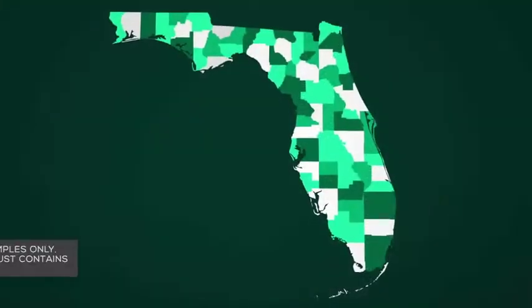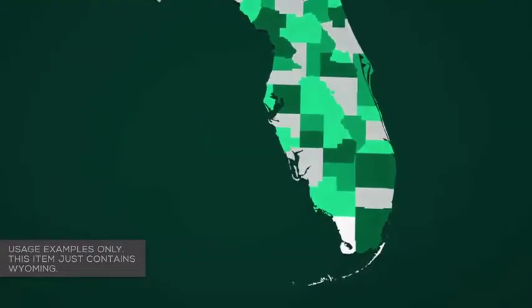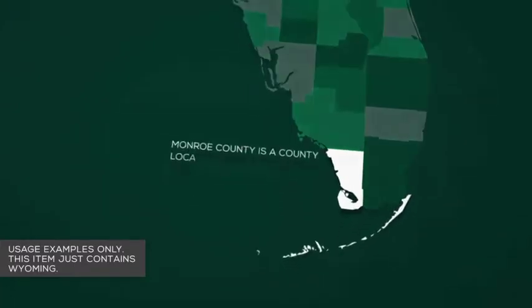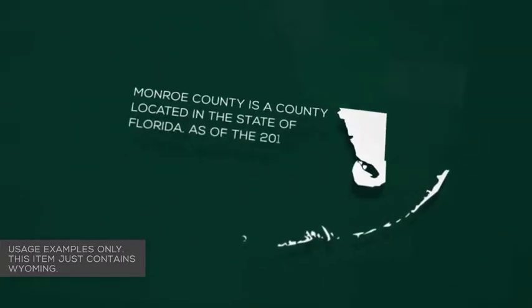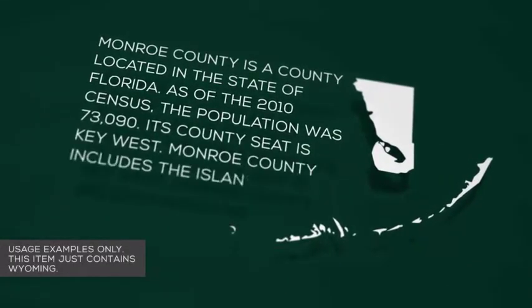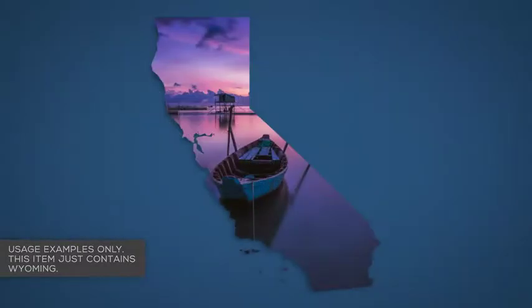Zoom in to areas of interest and hide the layers you don't need to focus on certain counties. Animate individual counties and add your own text and camera moves as required.